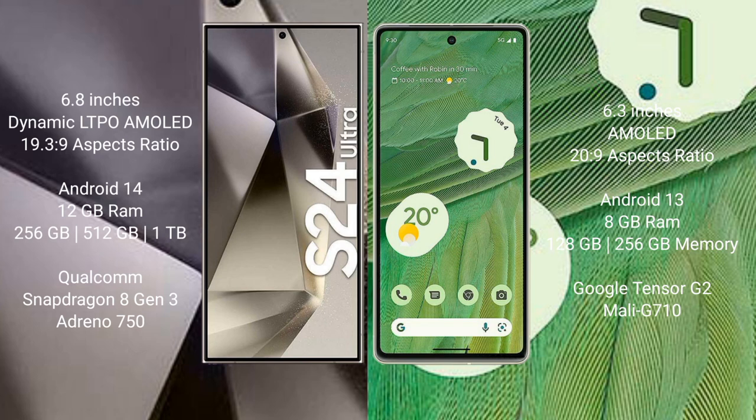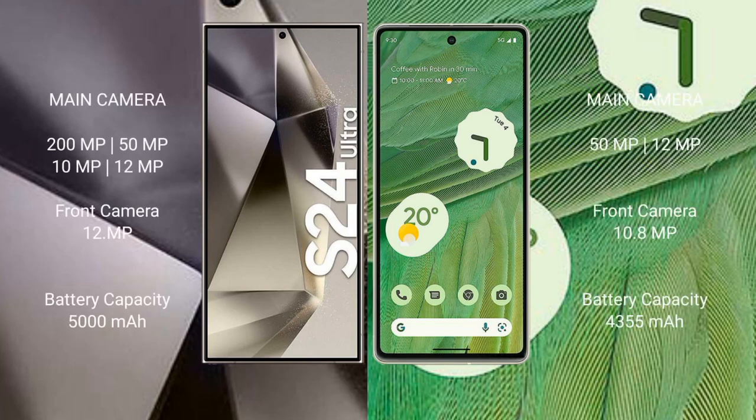The Samsung Galaxy S24 Ultra comes with 12GB RAM and 256GB, 512GB, or 1TB internal storage. The Google Pixel 7 is powered by the Google Tensor G2 processor with GPU Mali-G710.